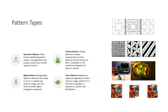What are the types of patterns? There are four: geometric patterns, texture patterns, object patterns, and color patterns. Geometric patterns involve repetitive geometric shapes or arrangements, including grids, circles, lines, or other regular structures. Texture patterns are interesting — they appear in shirts, saris, and the dresses we wear. Certain textures or surface characteristics form patterns like the texture of a fabric or wood grain. Tiles on walls and the repetitive arrangement of leaves in a forest also fall under texture patterns.